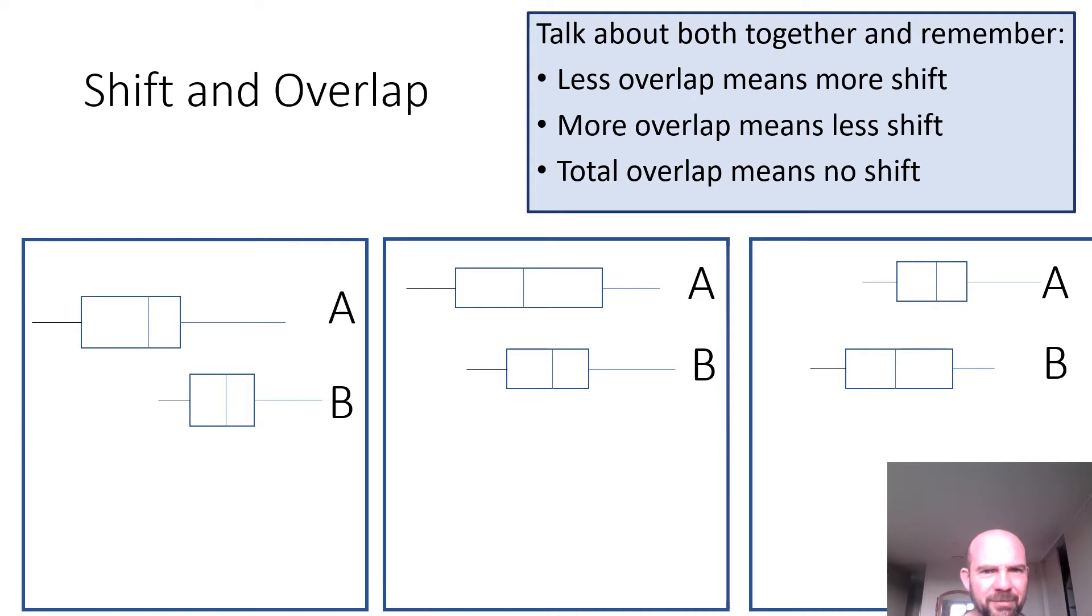Speaking of no overlap, look at that first example. One little thing, you should always remember the less overlap there is, the more shift there is. The more overlap, the less shift. Total overlap means no shift. So looking at this first one, there is no overlap. So there's quite a lot of shift. And B is shifted to the right of A.